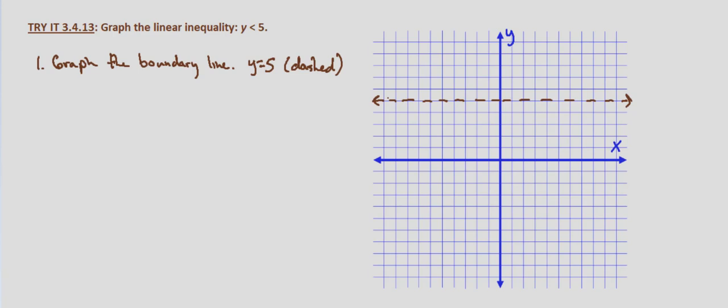If it's greater than, it's going to be above. And if we had x is less than or greater than some value, we would always shade to the right if it's greater than, and to the left if it's x is less than a number. But we'll go ahead and test a point for good measure.